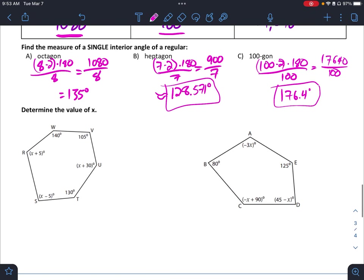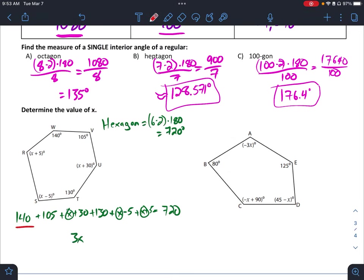And lastly, kind of putting it all together, here I have a hexagon, which I know by using my n minus 2 or my 6 minus 2 times 180 should tell me this is 720 degrees. And I'm just picking an angle, 140 plus 105 going all the way around. X plus 30 plus 130 plus X minus 5 plus X plus 5 equals 720. Combine your X's. X, X, X, 3X. Combine everything else. 140, 105, 30, 130, negative 5, positive 5. You should get 405 equals 720. Then you're just solving. Subtract 405, you get 3X equals 315, divide 3, and X is 105.